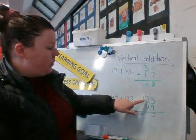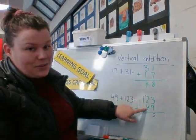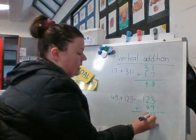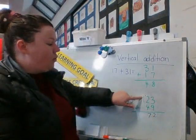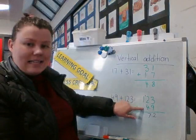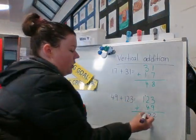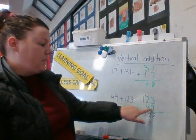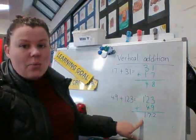Then we've got two plus four equals six plus one more equals seven. Pop that down here as well. And then one plus nothing because there's nothing down here equals one. This shows me that 123 plus 49 equals 172.